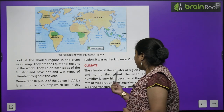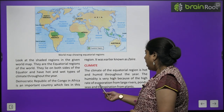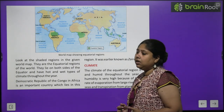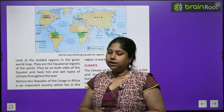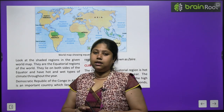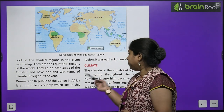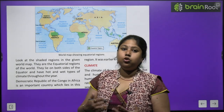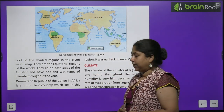The climate of the equatorial region is hot and humid throughout the year. The humidity is very high because of the high rate of evaporation from large rivers, ponds, seas, and transpiration from plants. Equatorial areas receive direct sun rays, which is why these areas near the equator are always hot and humid. Water from lakes, oceans, and rivers evaporates very quickly.